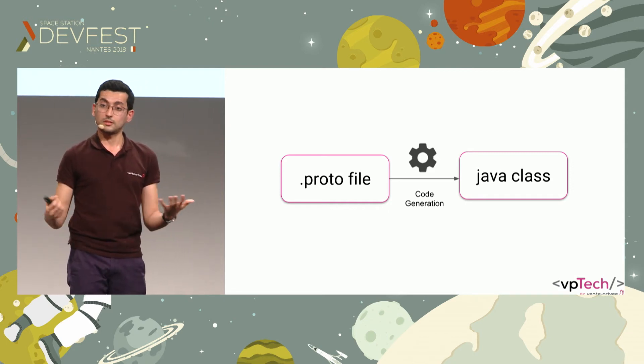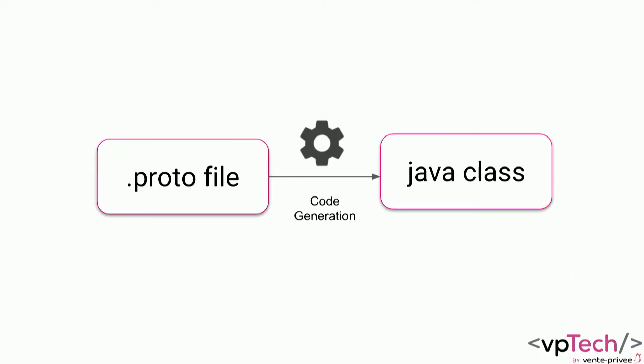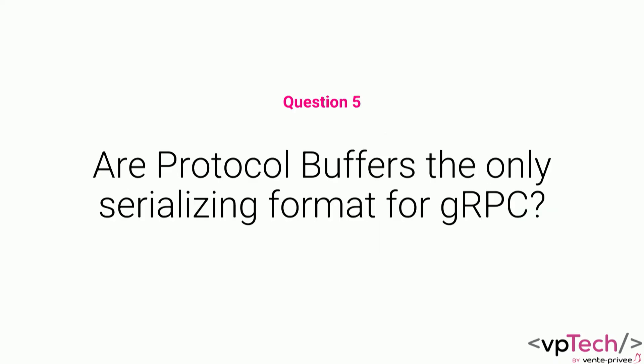Those RPC methods, as I said before, will abstract away all the networking boilerplate. Now, are protocol buffers the only thing we can use with gRPC, or are there some other alternatives? The answer is yes, there are some alternatives. You can even use JSON with gRPC, which is not the point and I'll tell you why later.